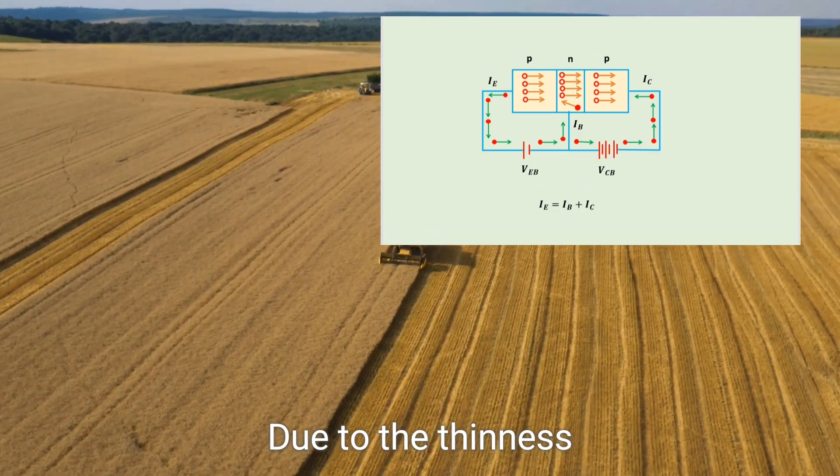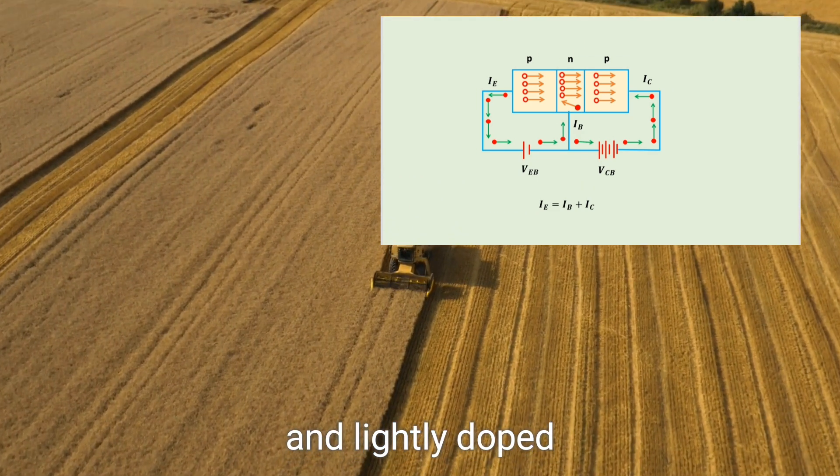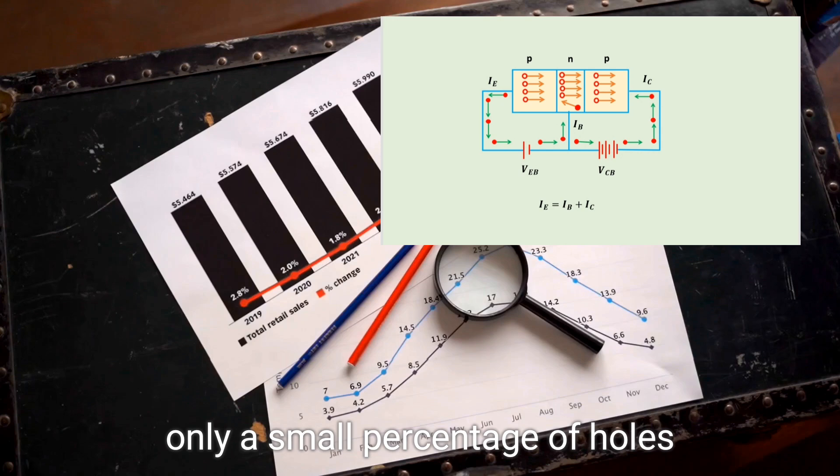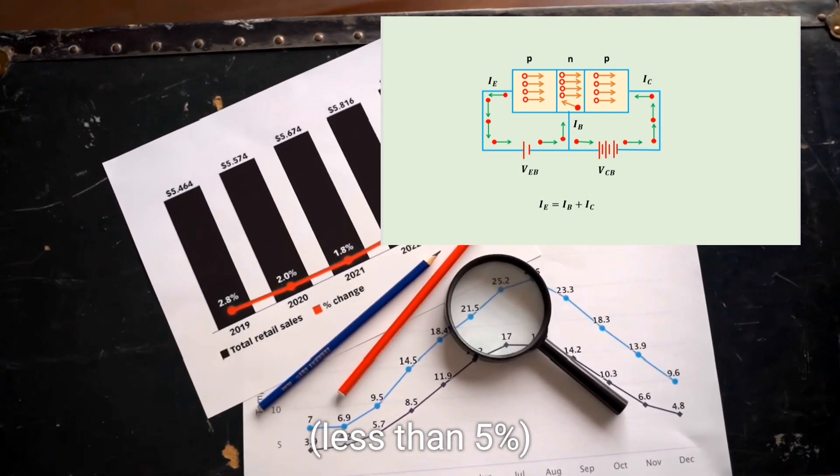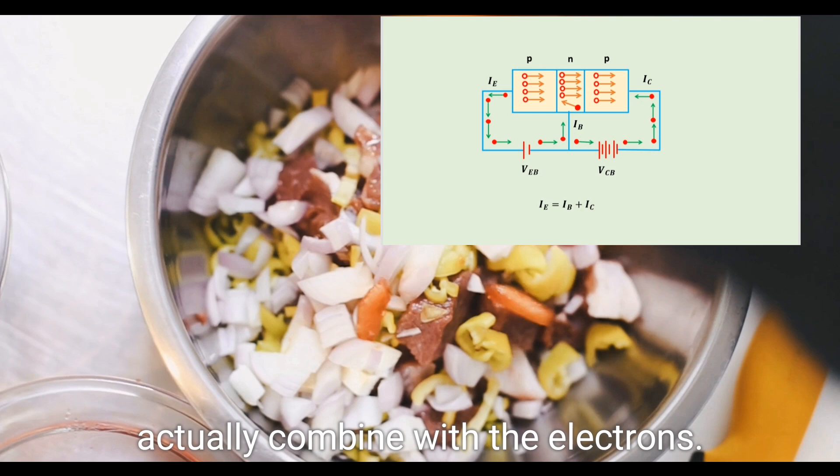Due to the thinness and lightly doped nature of the base, only a small percentage of holes, less than 5%, actually combine with the electrons.